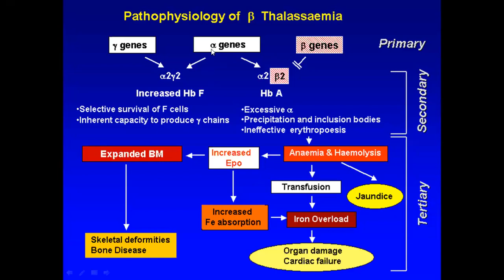Normally there are two alpha genes, two beta genes, and two gamma genes on chromosome 11; alpha genes are on chromosome 16. When two gamma and two alpha globins combine they form alpha-2 gamma-2, which is Hemoglobin F (fetal hemoglobin). When two alpha and two beta genes combine they form Hemoglobin A, the adult hemoglobin. When there is a primary defect in beta genes and they cannot produce beta globin chains, the alpha genes combine with gamma globins instead.